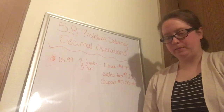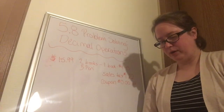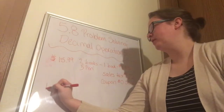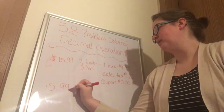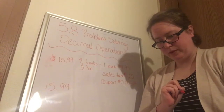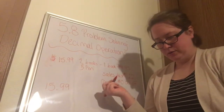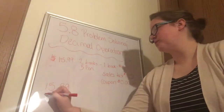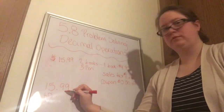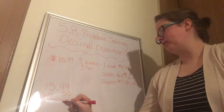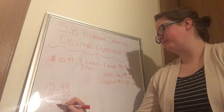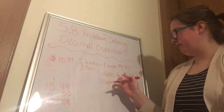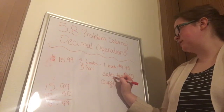We need to work backwards, starting with how much he spent altogether, which is $15.99. Then we are going to add back the coupon, because the coupon was taken off. So we add the $0.50. Since we added that, we can now take off the tax. So coupons, you add; sales tax, you subtract.